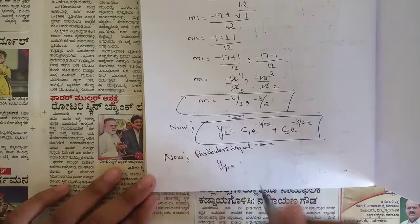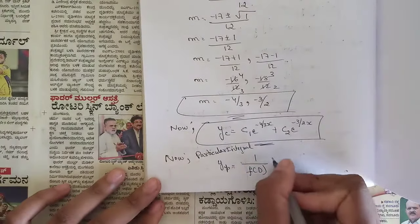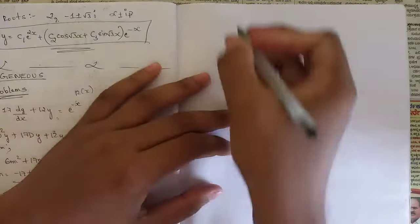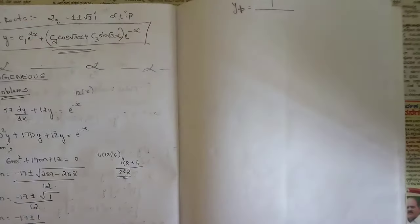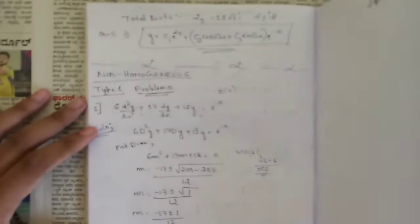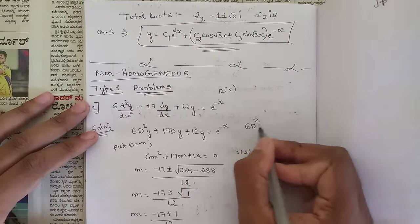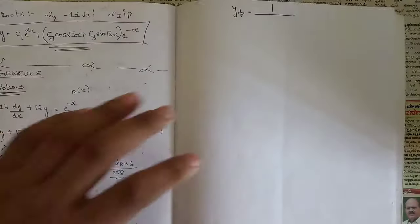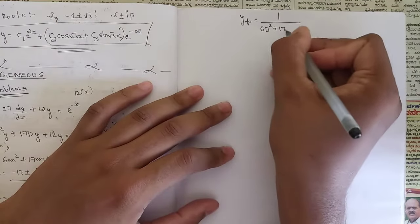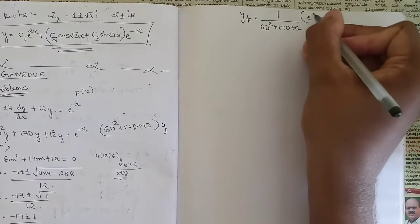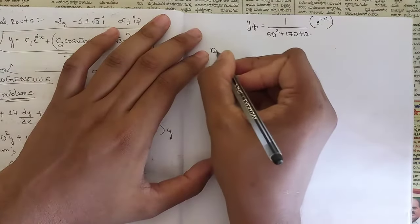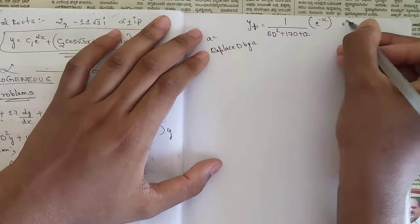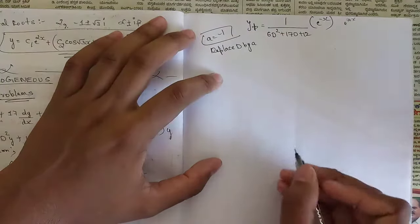The particular integral is yp = (1/f(D)) · r(x). What is f(D) here? Taking y common from the equation, f(D) = 6D² + 17D + 12. So yp = (1/(6D² + 17D + 12)) · e^(-x). The next step is to replace D by a, where a = -1.